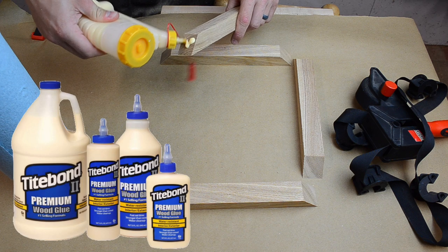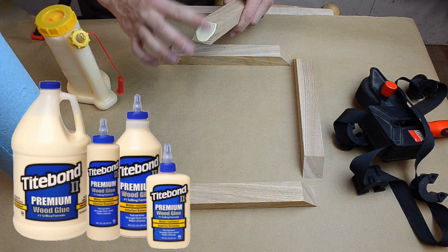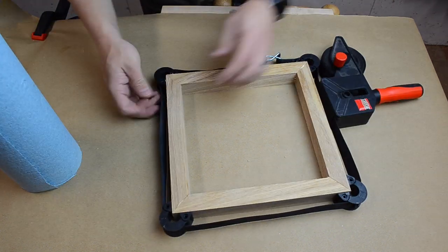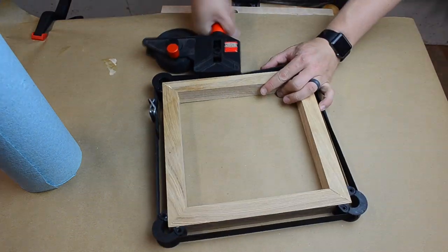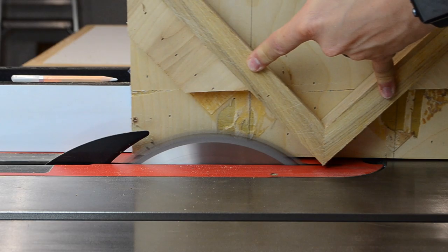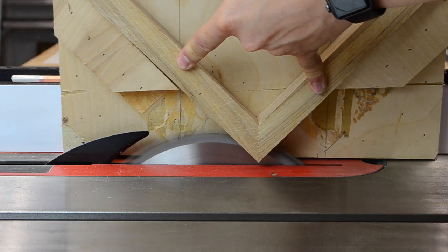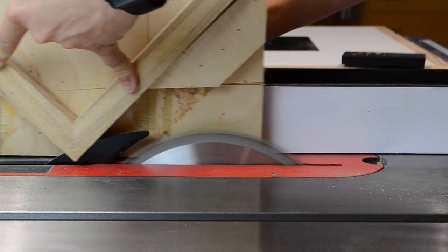I used Titebond 2 glue for this, and I let each frame dry overnight in a strap clamp. Then I used a spline cutting jig to cut the slots for the splines with a normal 1/8 inch thick table saw blade.